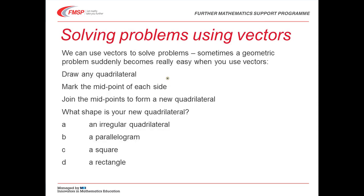We can use vectors to solve problems, and sometimes a geometric problem suddenly becomes really easy when you use vectors. Try this. On a piece of paper, using a ruler, draw a quadrilateral, any old quadrilateral, not a square. Mark the midpoint of each side. You can probably do that by eye. And then join the midpoints to form a new quadrilateral. What shape is your new quadrilateral? Pause the video and have another go, starting with a very different quadrilateral.